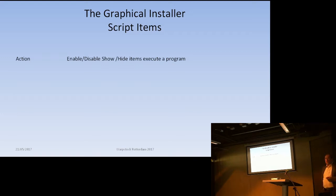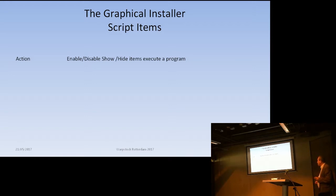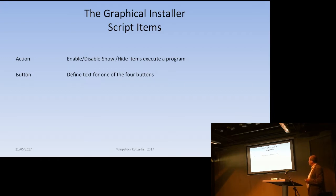To give you some ideas of what is in the script itself, there are various items. The first one is called 'action' — somewhere in a script you start action, then either enable, disable, and so on. These script items came into being as required: basically, if we need to do something and we don't have a script command that covers it, we define a new script command — that's the way it's gone.